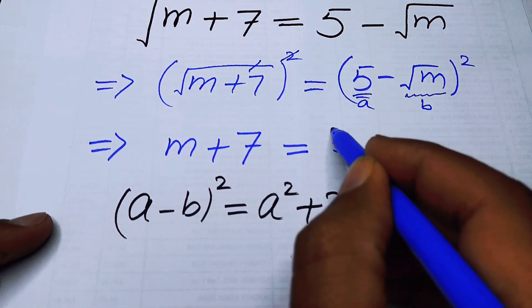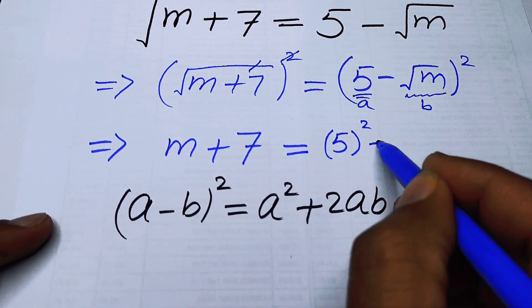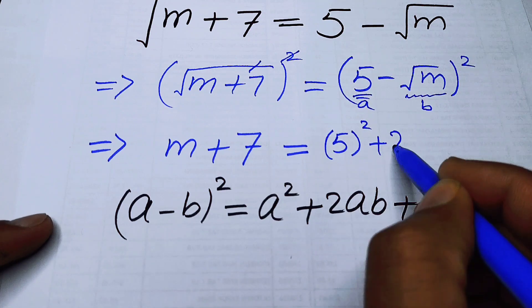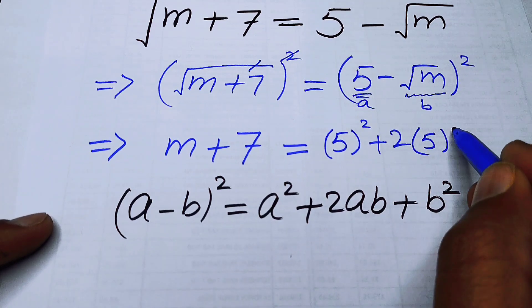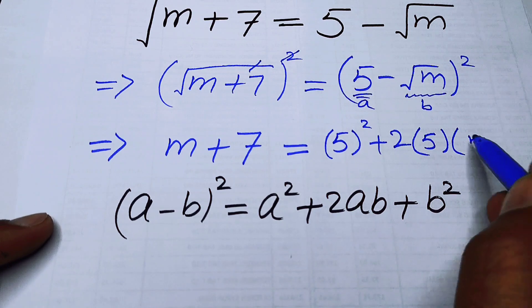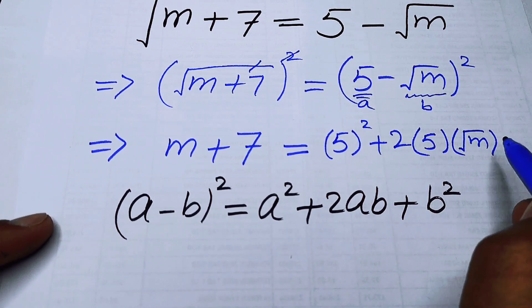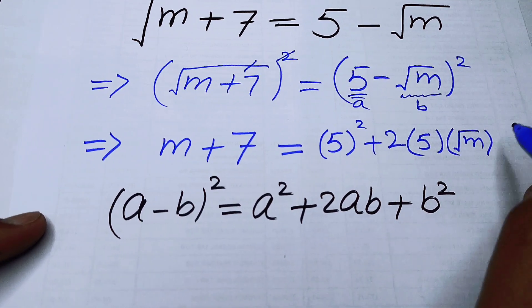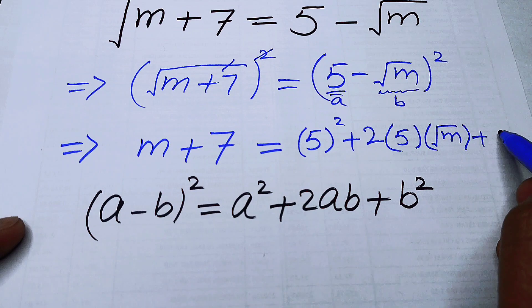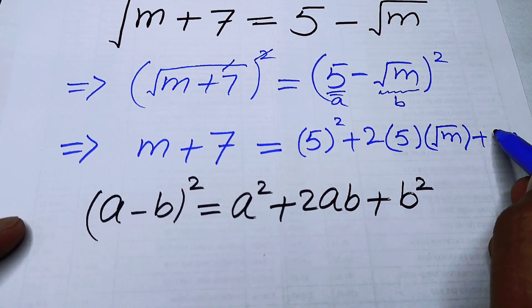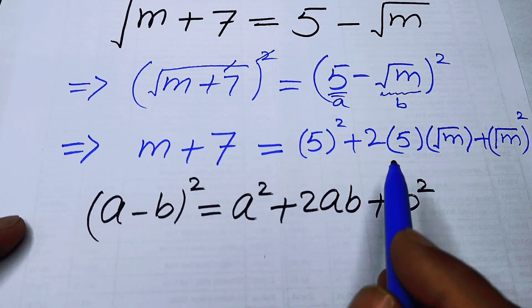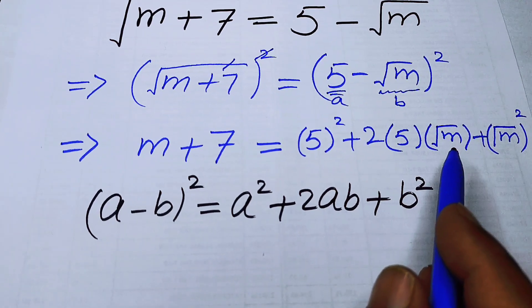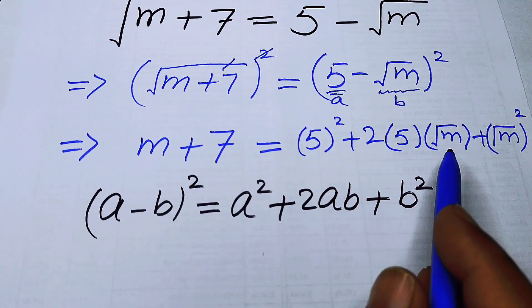Substituting, we get 5² - 2 × 5 × √m + (√m)². The (√m)² simplifies because the square and square root undo each other, giving us just m.